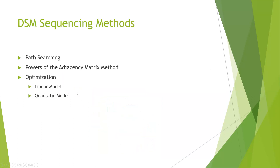DSM sequencing methods include path searching, powers of the adjacency matrix method, and optimization. We are dealing with optimization — linear modeling and quadratic modeling. In literature, path searching and the powers of the adjacency matrix method have been done, but there is no mention of using optimization with linear modeling and quadratic modeling to sequence the DSM.